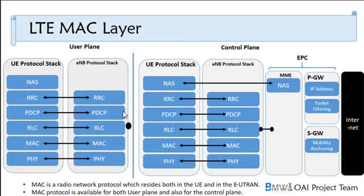There is a UE part and an eNodeB. eNodeB is like a base station that transmits and receives data from the UE. When you transmit data from the UE to the eNodeB, it is called uplink. When you receive data from the eNodeB at the UE — like a phone — that is downlink data. In the LTE network, there is UE and eNodeB, and the EPC is the core network. Both the control plane and user plane go directly to the EPC.